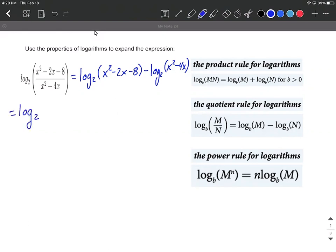Let's factor this as log base 2, and then big set of parentheses here on the inside. I believe that will split up as x and x for the x squared. We'll use 2 and 4 for the 8, positive 2 minus 4.